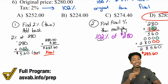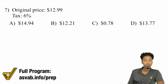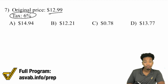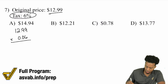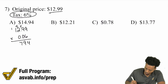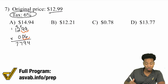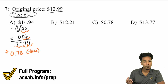Let's do one more problem: $12.99 with a 6% tax. We'll find 6% first and then add it back. So 1299 × 0.06: 9×6=54, carry 5; 9×6=54, carry 5 is 59; 2×6=12, carry 5 is 17; 1×6=6, carry 1 is 7. With two decimal places each, four total, we get approximately $0.78 in tax.